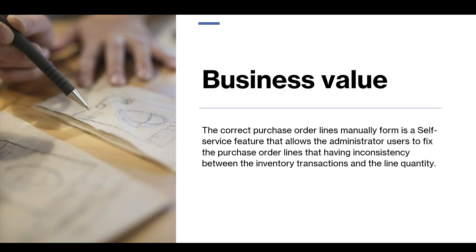The Correct Purchase Order Lines Manually form is a self-service feature that allows administrator users to fix purchase order lines that have inconsistency between the inventory transactions and the purchase order line quantity. This feature was introduced with the objective to reduce end user downtime until fixing corruption that might have been caused by a code defect or unexpected updates.